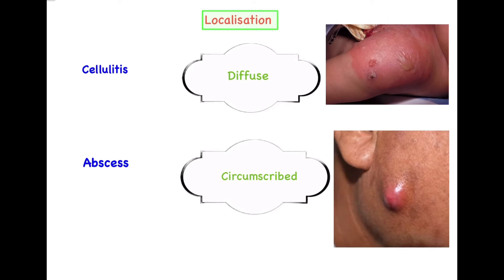The fourth differentiating point is localization. Cellulitis is a diffuse swelling that does not have appreciable boundaries — it freely invades the submucosal and subcutaneous planes, resulting in a very diffuse swelling. Abscess, however, is circumscribed and purely localized. So cellulitis is diffuse whereas abscess is circumscribed or localized.